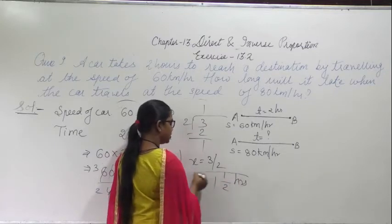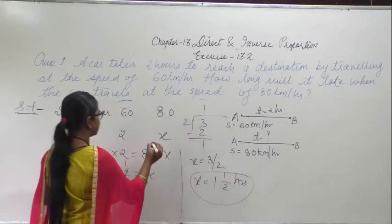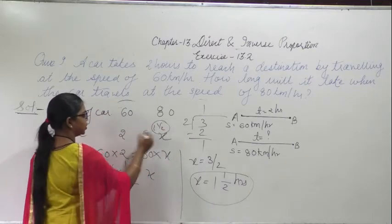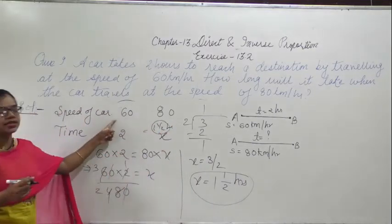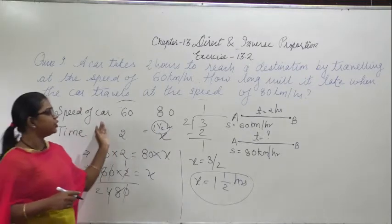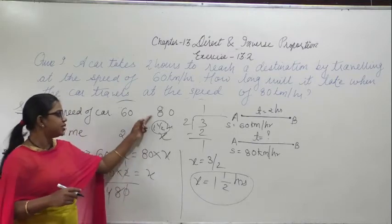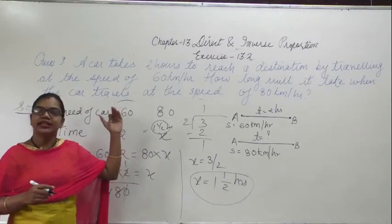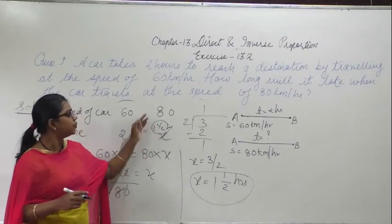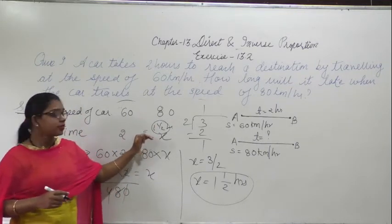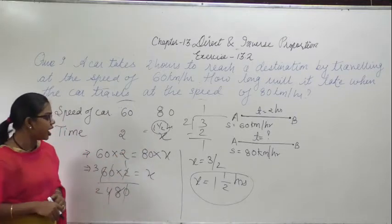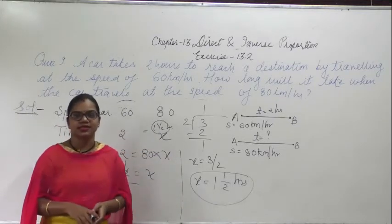From here x will be equal to 1 and a half hours. So if the speed is 60 km, time taken to reach the destination is 2 hours. When you increase the speed to 80 km, time will be decreased. So when speed is 80 km per hour, the time is decreased — that is 1 and a half hours. So this is the answer.